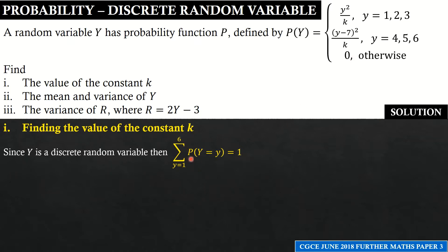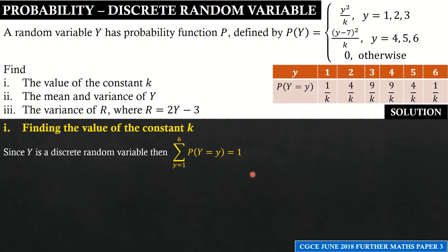Since Y is a discrete random variable, the summation of all probabilities from y = 1 to the last value of Y equals 1. We create a table with values of Y: 1, 2, 3, 4, 5, 6. For p(Y): when y = 1 we get 1/k; when y = 2 we get 4/k; when y = 3 we get 9/k.